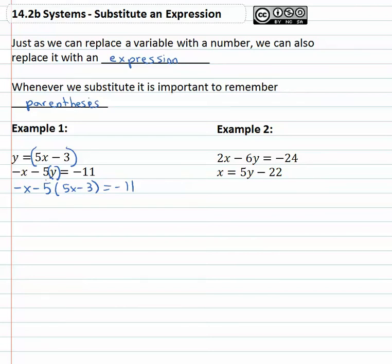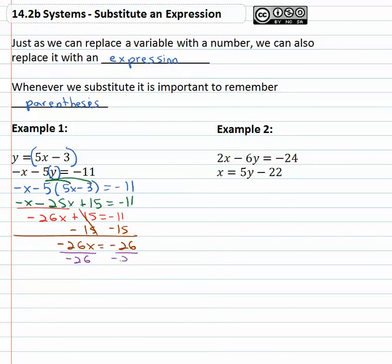This now looks like an equation we would have seen a long time ago in our math career. We'll solve first by distributing: -x - 5(5x - 3) = -11, which gives -x - 25x + 15 = -11. We need to continue simplifying by combining like terms: -26x + 15 = -11. It's now a two-step equation. Subtract 15 from both sides: -26x = -26. And finally divide both sides by -26, and we find out x is equal to positive 1.